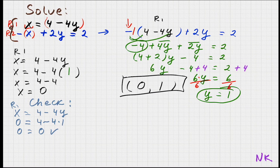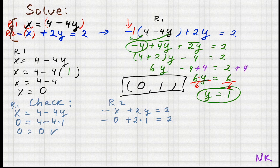It's always a good idea to check. For row 1, x equals 4 minus 4y: substituting x equals 0 and y equals 1 gives 0 equals 4 minus 4, which is 0 — true. For row 2, negative x plus 2y equals 2: negative 0 plus 2 times 1 equals 2, so 2 equals 2 — true. Our solution is correct.